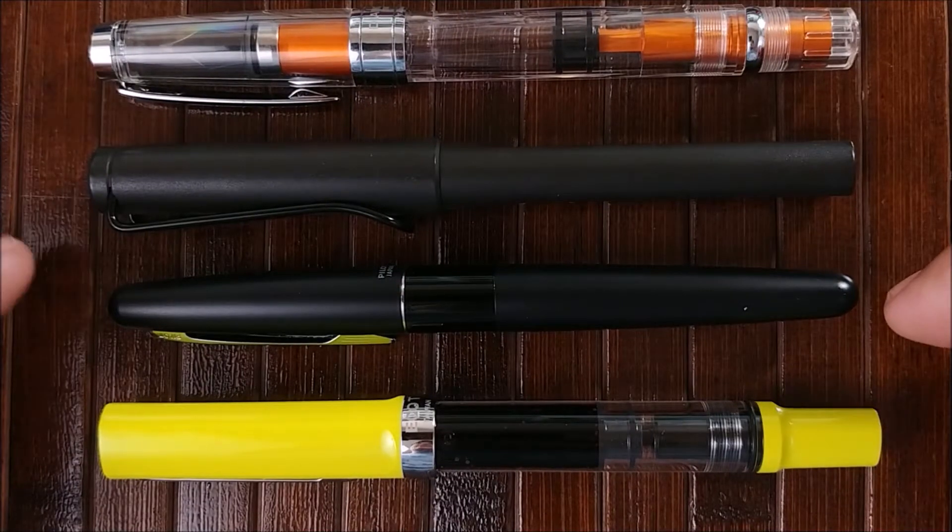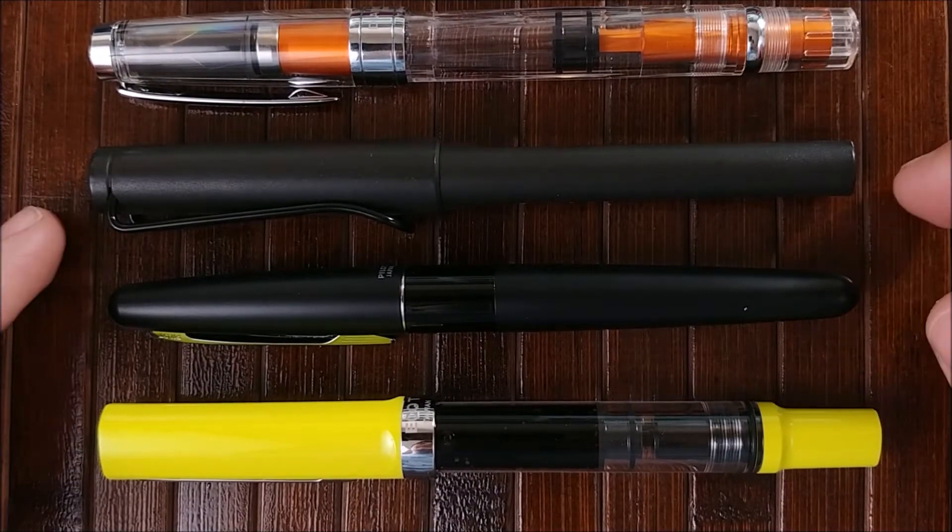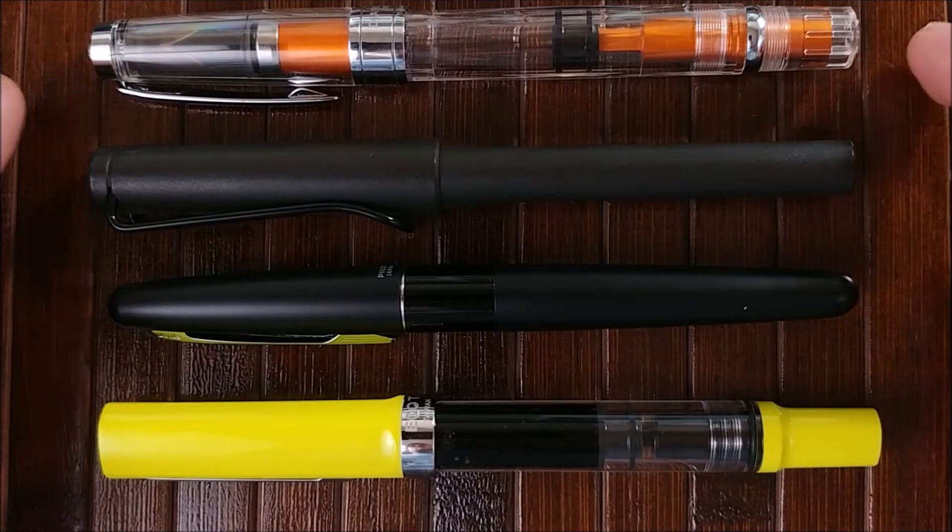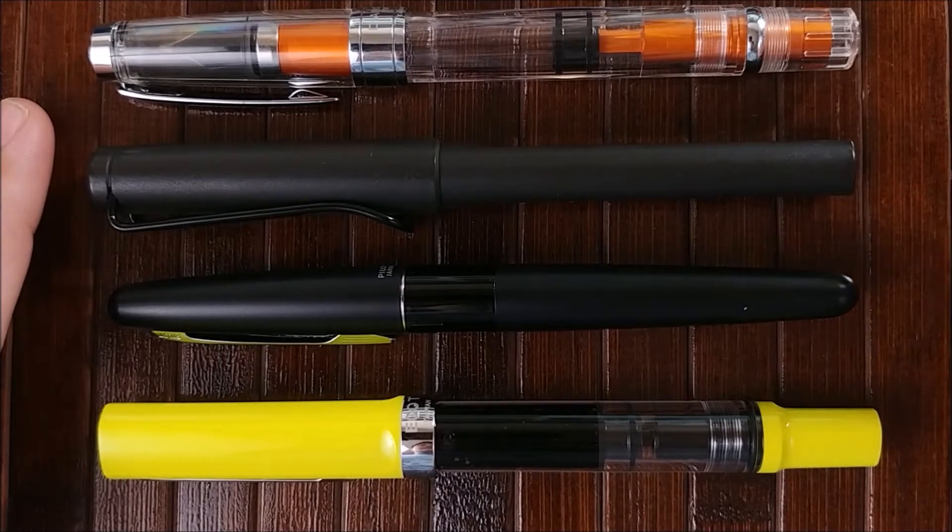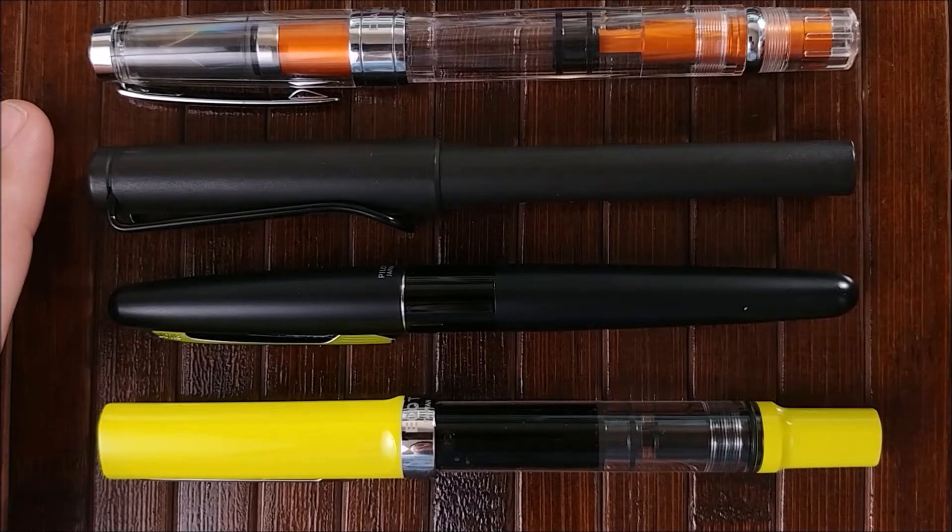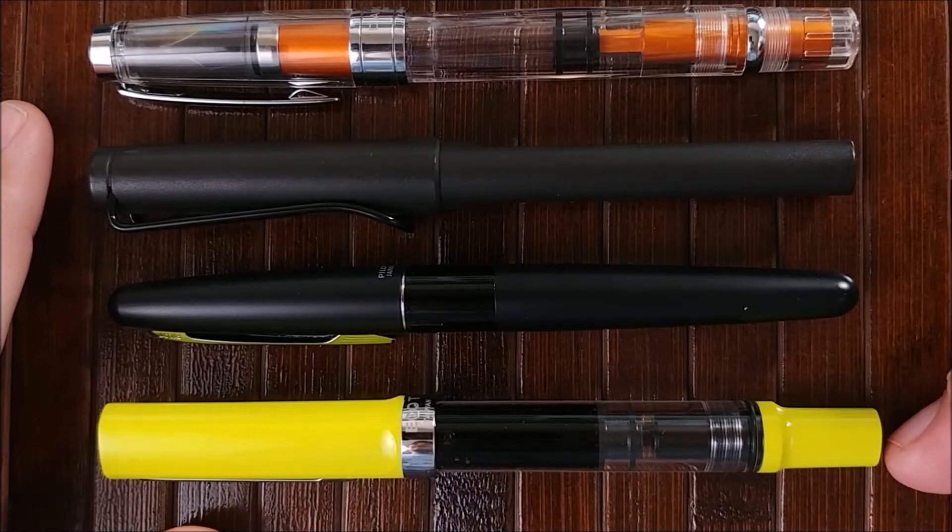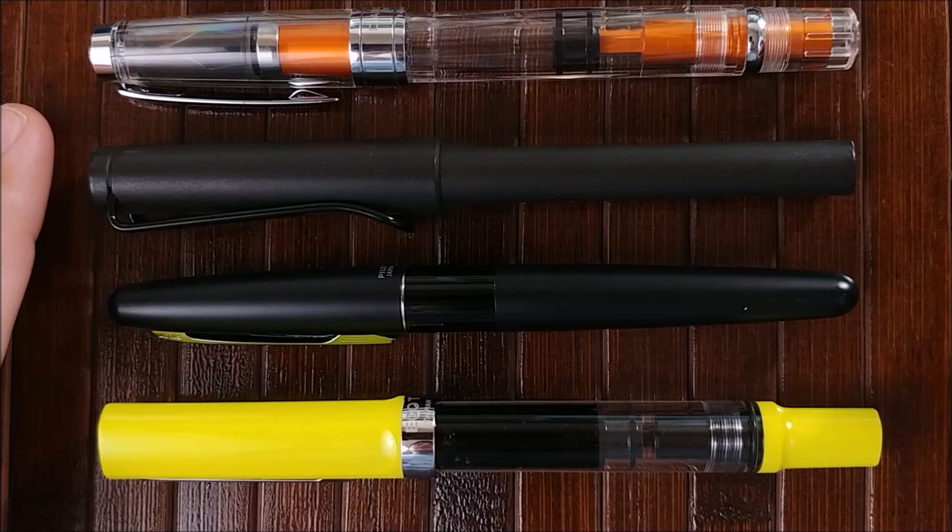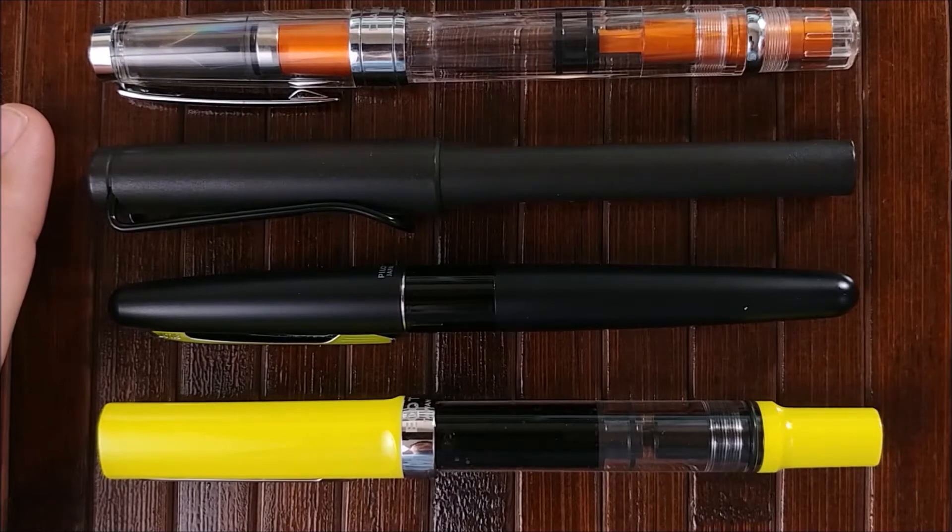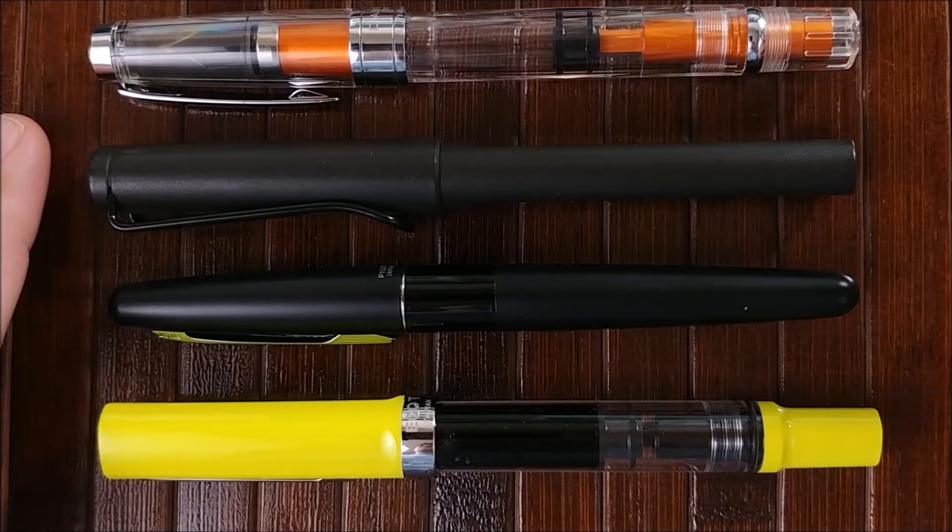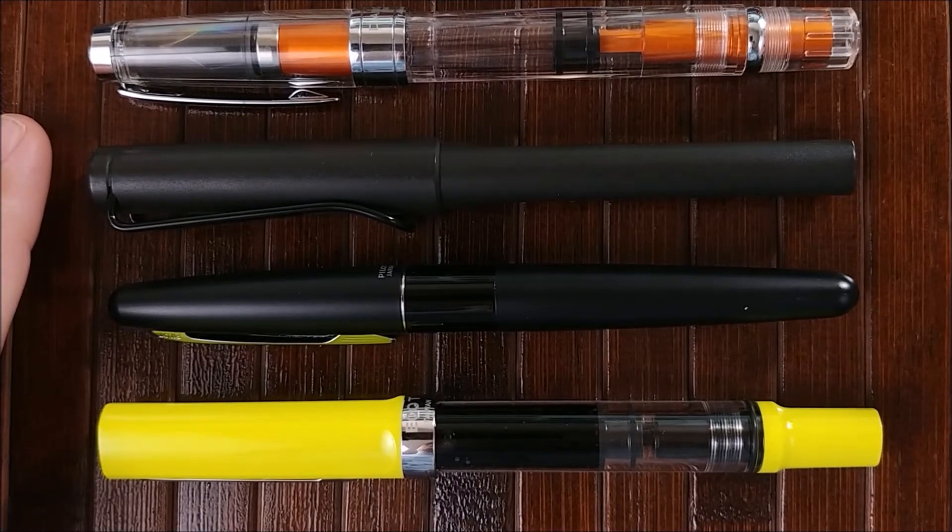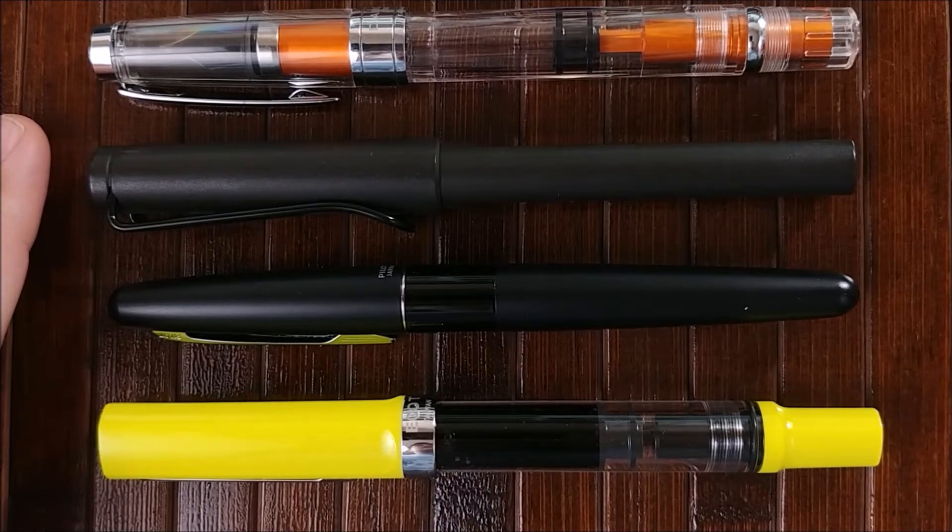Here's the TWSBI ECO T next to the Pilot Metropolitan, the Lamy Safari, and the TWSBI 580 All. So you can see it's a very full-sized pen, a little bit longer than the Safari, a little bit longer than the Metropolitan. Actually, it's a little bit longer than the 580 as well. It's a pretty good size, especially in this beginner fountain pen range. Some of them can be a little small. This pen is definitely not one of those.